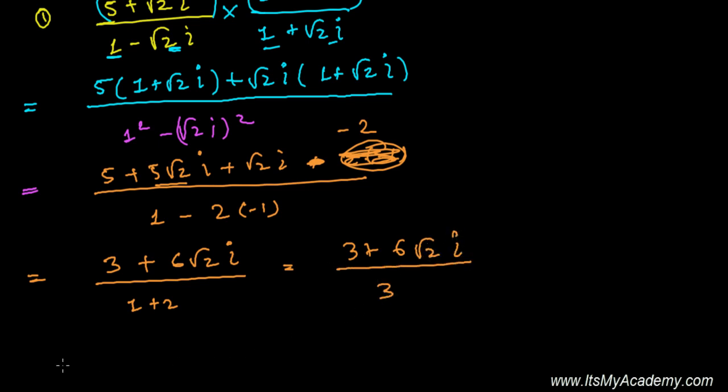Now you can take 3 common and it will be (1 + 2√2i)/3. The 3s cancel, and finally you'll get 1 + 2√2i.